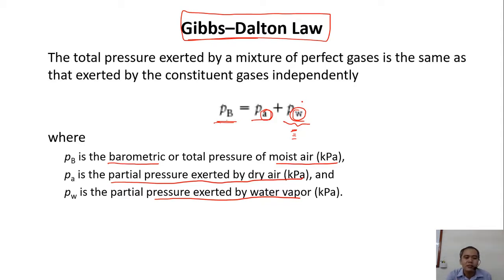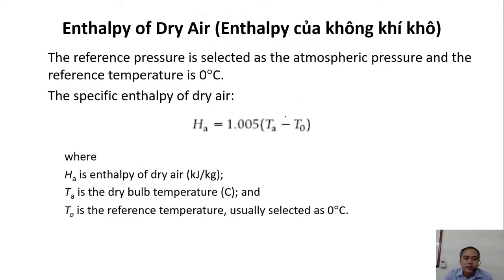We review the enthalpy of dry air. Enthalpy is the amount of energy you need to convert from one point of energy to another point of energy. Normally, when you want to increase the temperature of air from a certain temperature to another point of temperature, the energy that you need would be the specific heat.